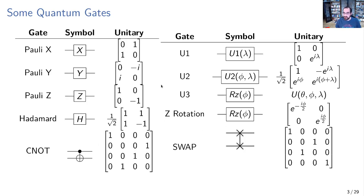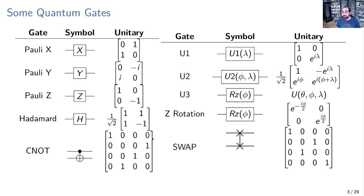Here I've put a bunch of quantum gates — some we'll be dealing with in this presentation, others are common ones you might see just to get a feel. The important thing is the unitary matrix: each quantum gate can be represented as a unitary matrix, which you multiply against the state vector for the quantum state. It's basically just matrix multiplication, and all the visualizations are just a geometric representation of that.